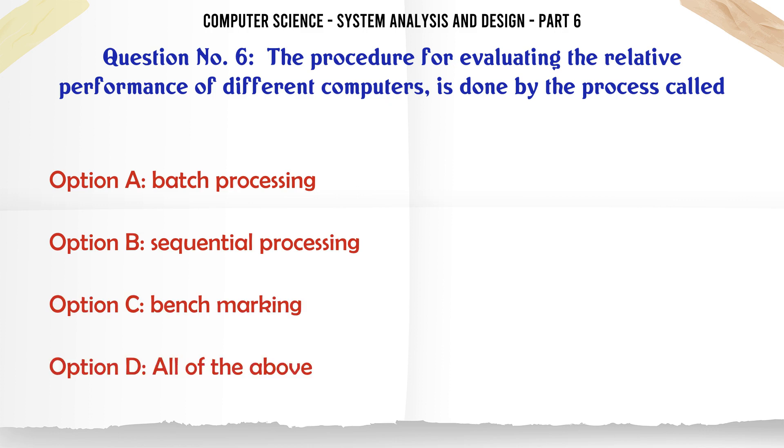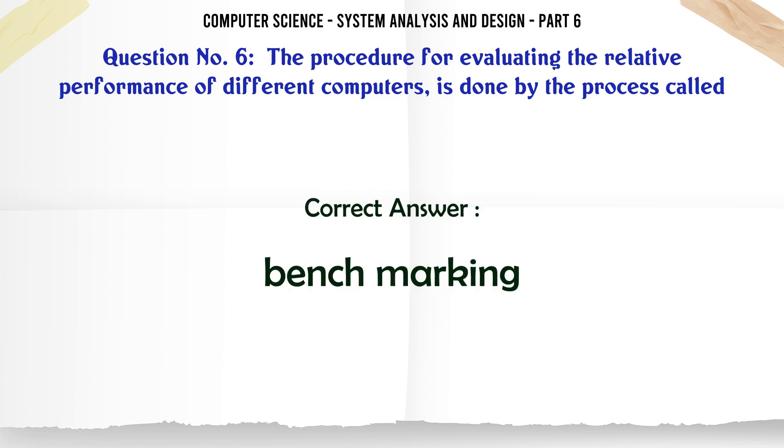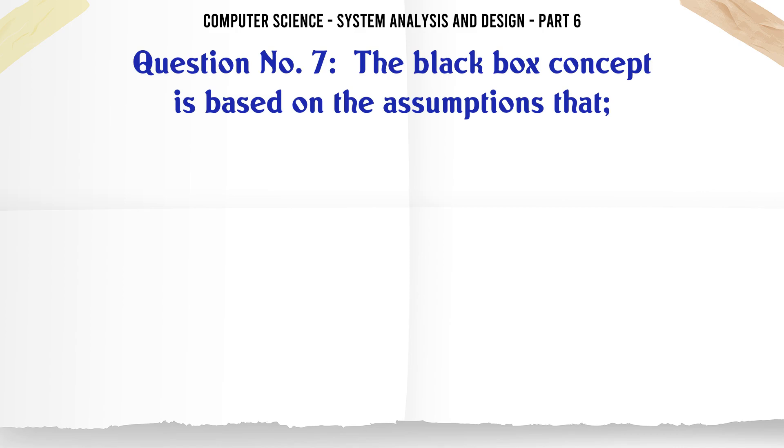The procedure for evaluating the relative performance of different computers is done by the process called: A. Batch processing, B. Sequential processing, C. Benchmarking, D. All of the above. The correct answer is: Benchmarking.